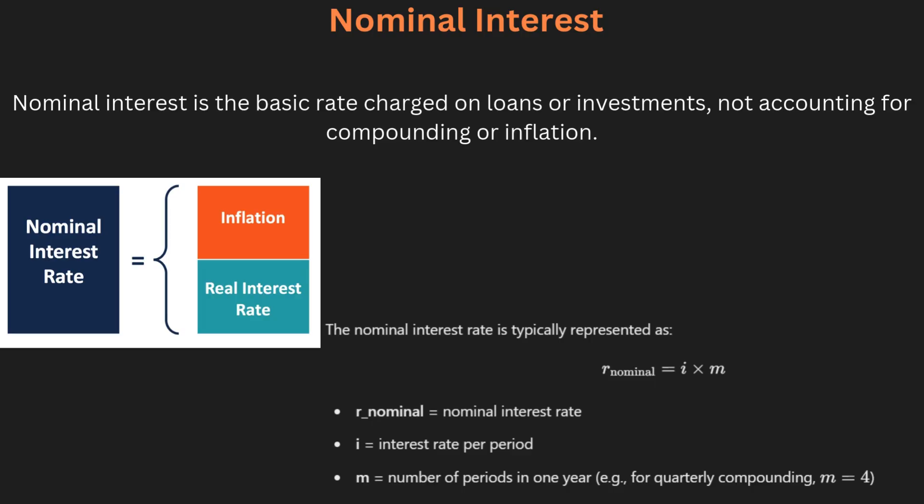Nominal interest is the rate at which interest is charged without considering the effect of compounding or inflation. For example, a loan might have a nominal interest rate of five percent per year. Engineers use nominal interest to calculate the basic cost of borrowing money. However, it does not give the full picture since it does not account for how frequently interest is applied. While useful for quick calculations, engineers should also look at effective interest rates to understand the real cost of borrowing.